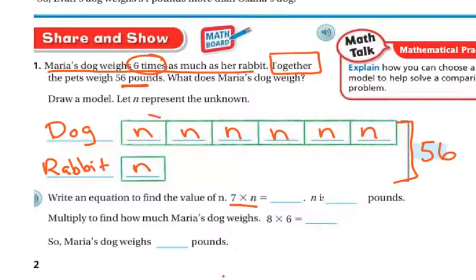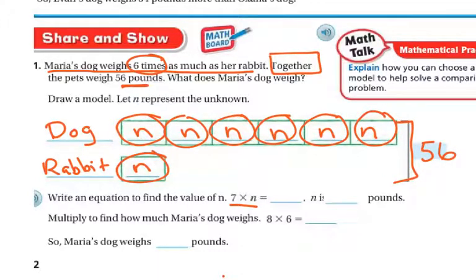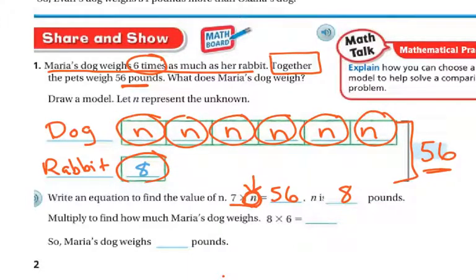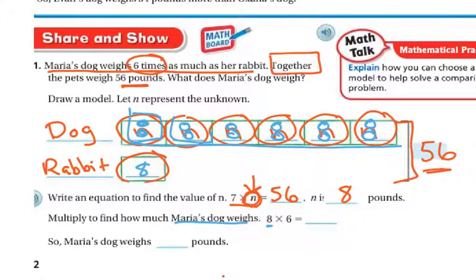We use seven times N because we have six N's for the dog plus one N for the rabbit, giving seven total. Seven times N equals 56. What times seven equals 56? That's eight, so N equals eight — the rabbit weighs eight pounds. To find the dog's weight, we multiply eight times six because the dog is six times as much. Eight times six is 48, so Maria's dog weighs 48 pounds.